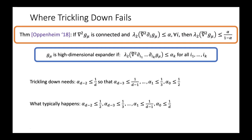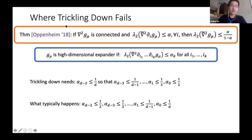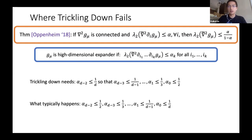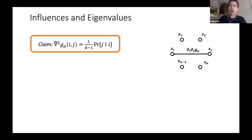The trickle-down theorem is useful for many applications in the high-dimensional expansion community, but for these specific sampling applications this proof method does not work. The plan for the rest of the talk is to show how using correlation decay, we can actually prove expansion of these polynomials. We can write down the entries of the normalized Hessian as — up to a one-over-d factor — essentially the conditional marginals of a variable conditioned on some other variable.